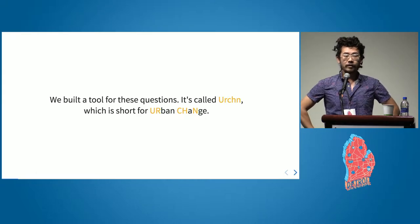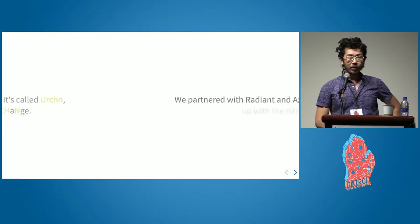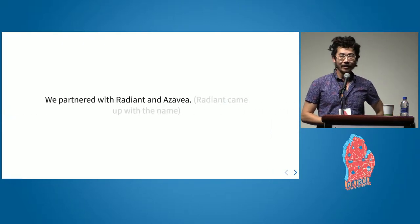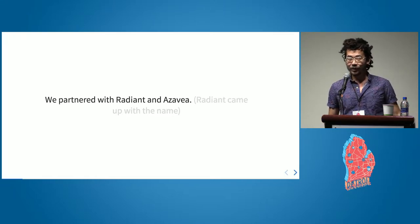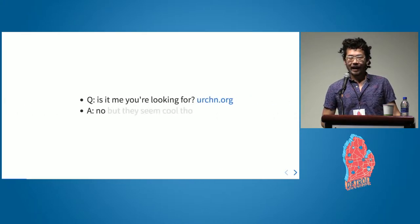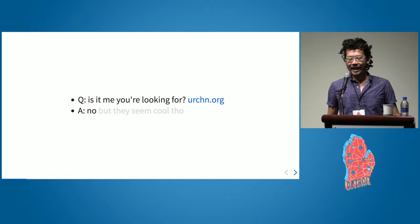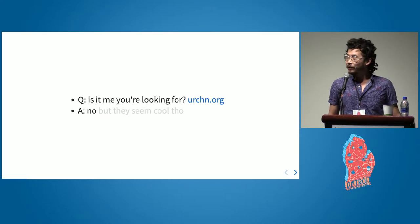The tool that we built for this is called Urchin. It is an urban change detection tool. We built it in partnership with Radiant and Azavia. Radiant is responsible for the name Urchin — so that wasn't us. I believe it came up in a boardroom. One thing we didn't do before we called it that is make sure no one else has something called Urchin. There's actually a video production company called Urchin — and by the way, if you own urchin.org, please contact me. I am very sorry about this.